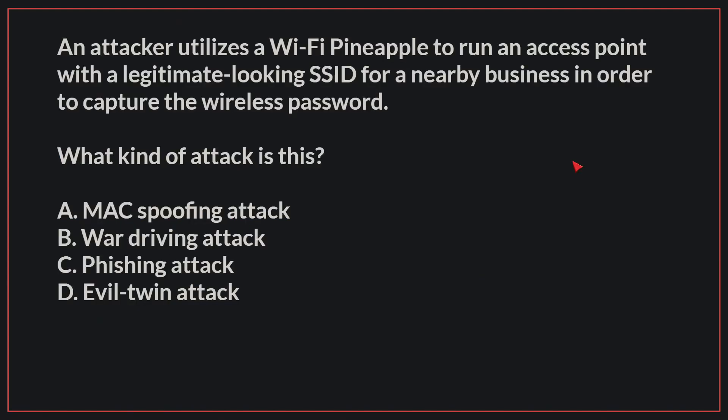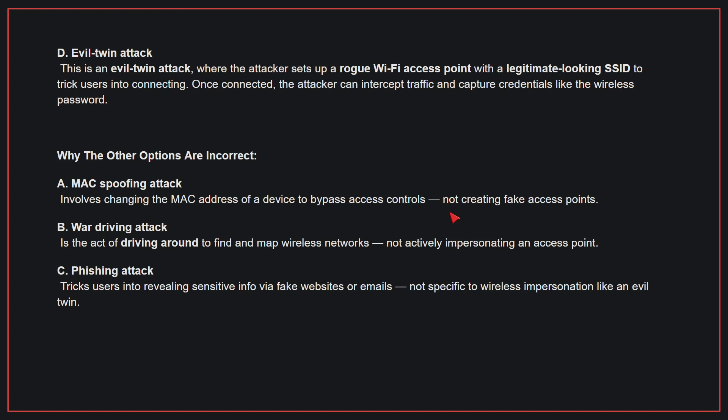An attacker utilizes a Wi-Fi pineapple to run an access point with a legitimate-looking SSID for a nearby business in order to capture the wireless password. What kind of attack is this? The correct answer is D. Evil Twin attack. This is an Evil Twin attack, where the attacker sets up a rogue Wi-Fi access point with a legitimate-looking SSID to trick users into connecting. Once connected, the attacker can intercept traffic and capture credentials like the wireless password.